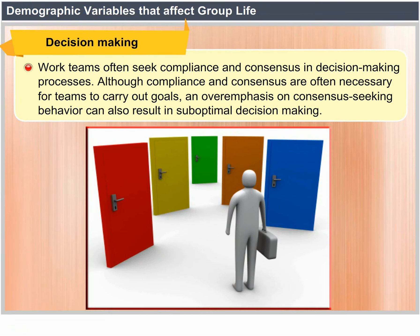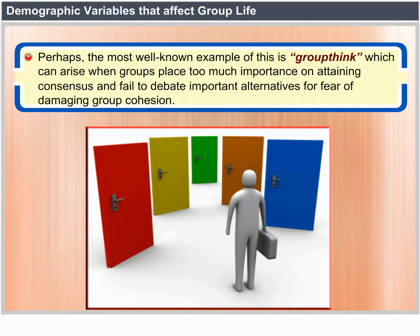Decision making. Work teams often seek compliance and consensus in decision-making processes. Although compliance and consensus are often necessary for teams to carry out goals, an over-emphasis on consensus-seeking behavior can result in sub-optimal decision-making. Perhaps the most well-known example of this is groupthink, which can arise when groups place too much importance on attaining consensus and fail to debate important alternatives for fear of damaging group cohesion.